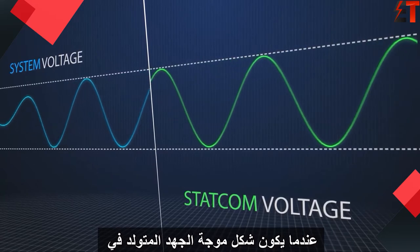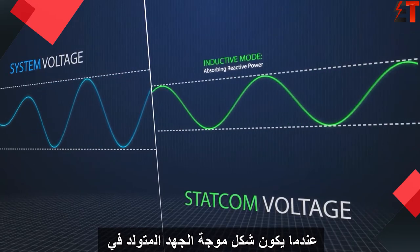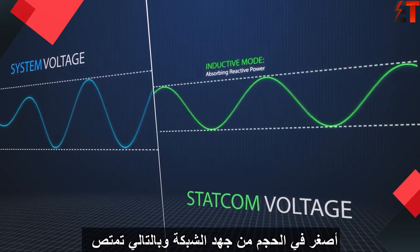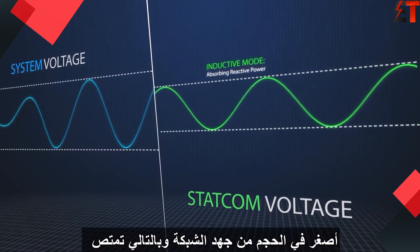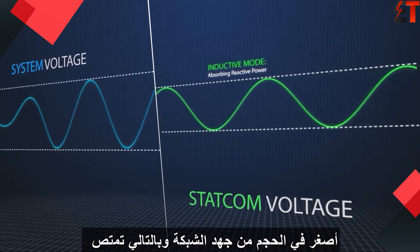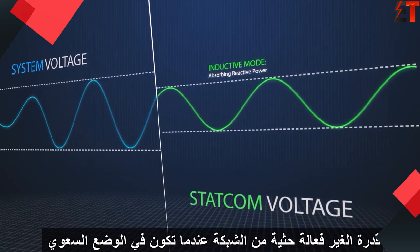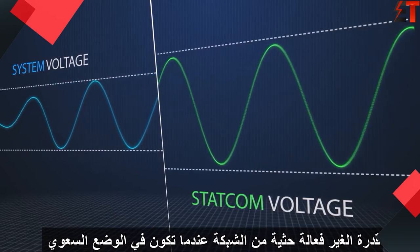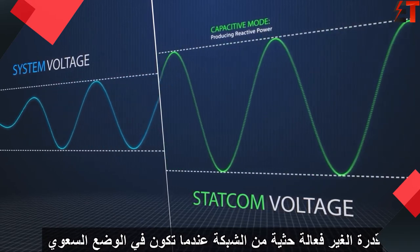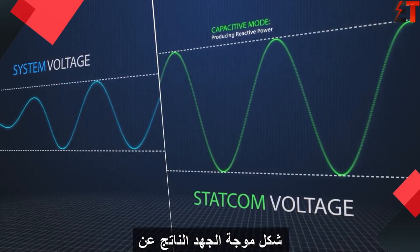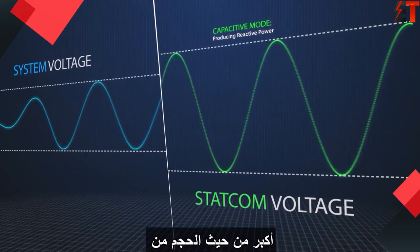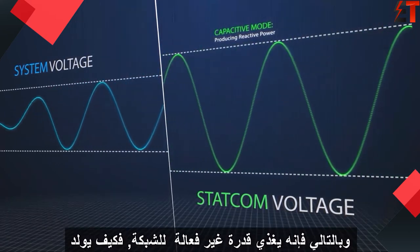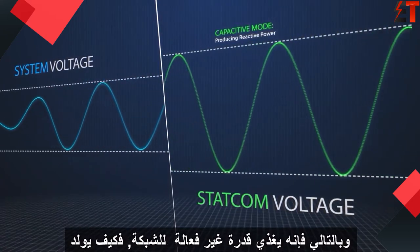When in the inductive mode, the voltage waveform generated by the STATCOM is smaller in magnitude than the grid voltage, thereby absorbing inductive reactive power from the network. When in the capacitive mode, the voltage waveform generated by the STATCOM is larger in magnitude than the grid voltage, thereby generating reactive power to the grid.